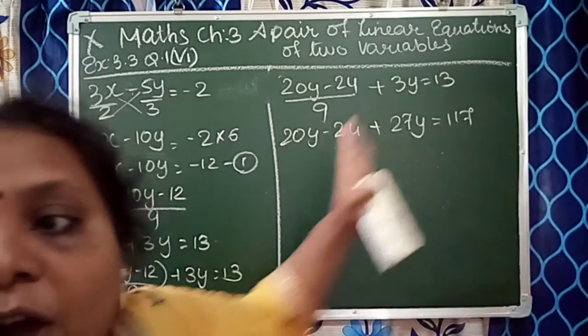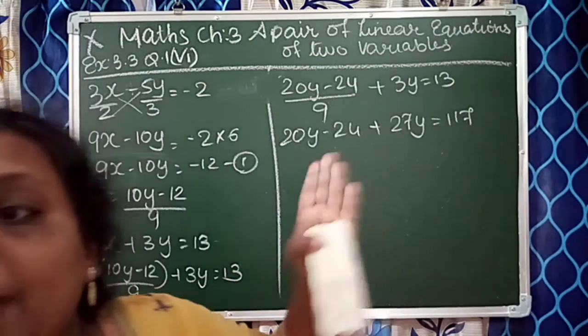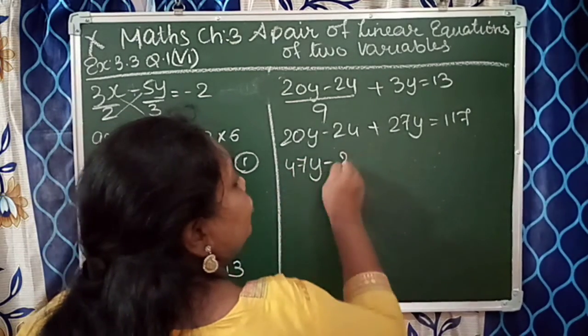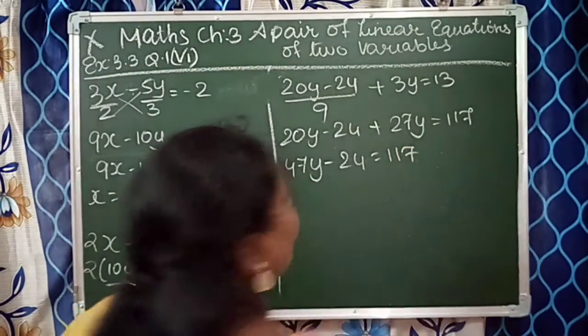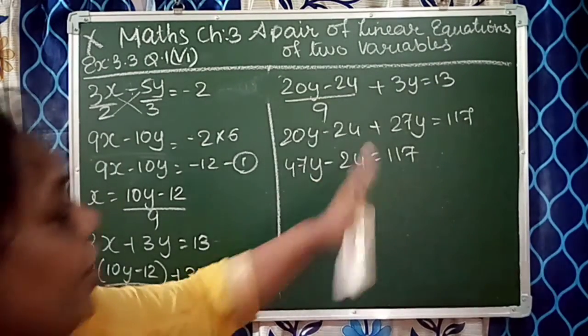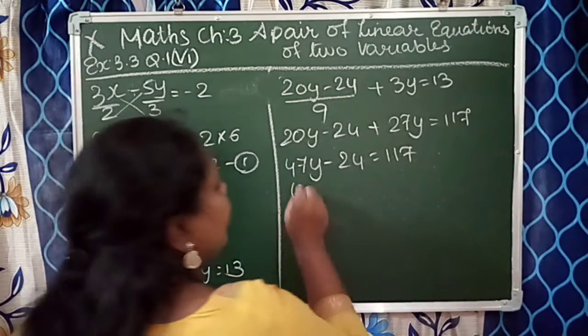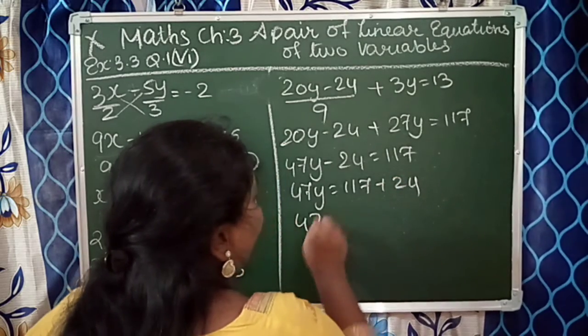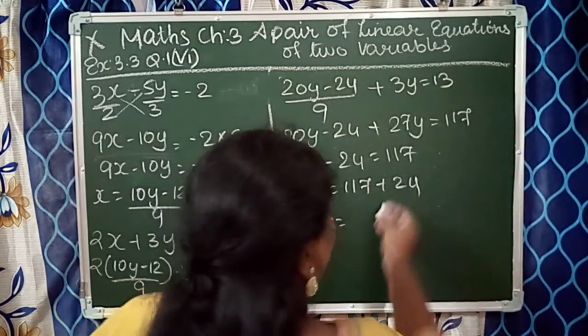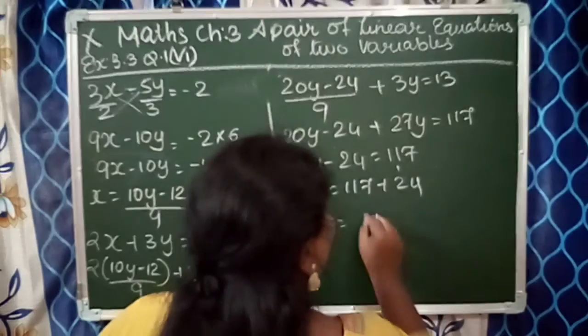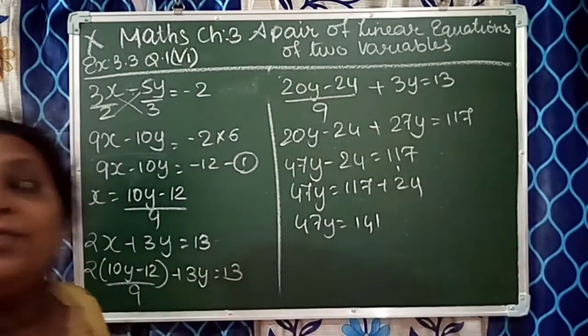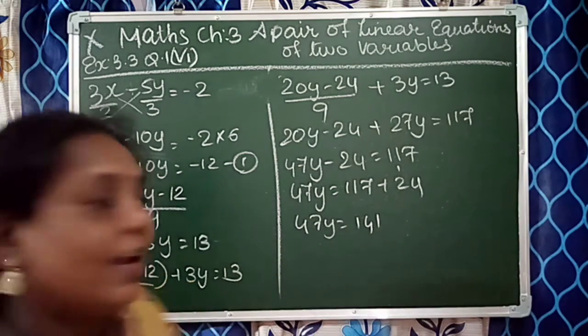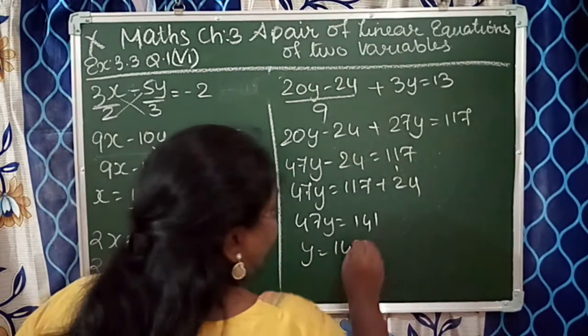Now we'll take y terms together. 20y plus 27y is 47y, minus 24 is equal to 117. We'll move 24 to the positive side. 47y is equal to 117 plus 24. 4 plus 7 is 11, so 141. Now we'll divide 141 by 47. y is equal to 141 upon 47.